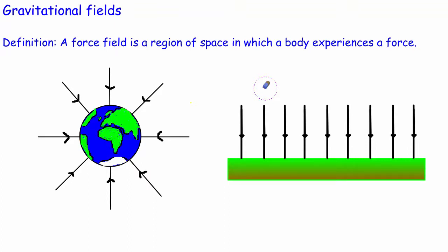Hello and welcome to this video where today we're going to be looking at gravitational fields again, and in particular we'll be looking at gravitational field strength. As a quick reminder, we saw in the previous video that there were two different types of field. There's a radial field where the field lines look like the spokes on a bicycle wheel, or a uniform field where all of the lines are parallel and equally spaced.